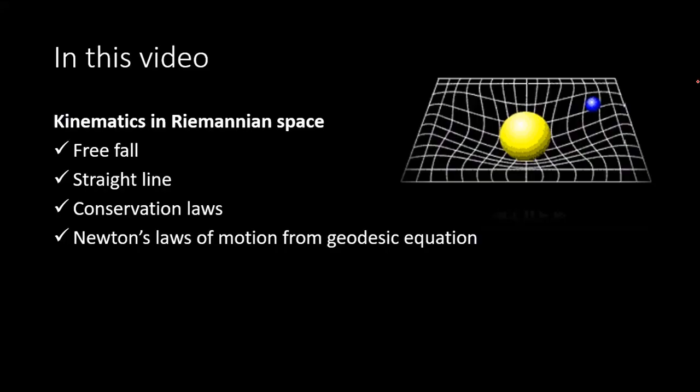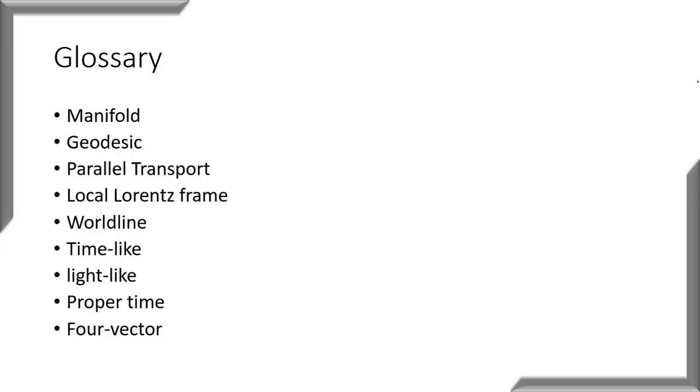Hello dear student, welcome to another lecture in tensor analysis. In this lecture we will be learning more on physics. We will be looking into kinematics in Riemannian space. In this video we will be talking about how a free fall is defined in Riemannian space, what is actually a straight line, different conservation laws, and how to derive Newton's laws of motion from a geodesic equation.